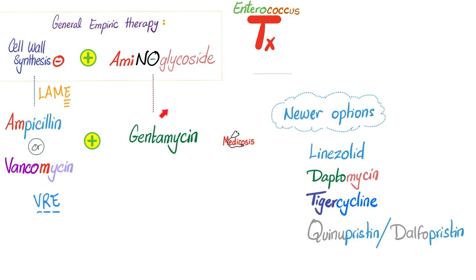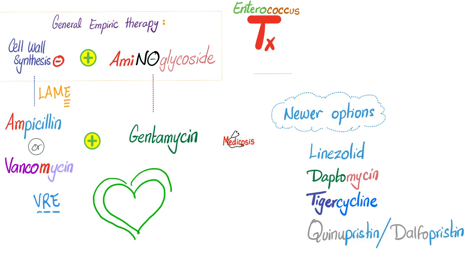Use just one drug that will cover the specific bacteria, plus some of the newer options such as linezolid, daptomycin, tigecycline (which is a tetracycline), and quinupristin-dalfopristin. For endocarditis specifically, the treatment is ampicillin plus gentamicin, given intravenously.